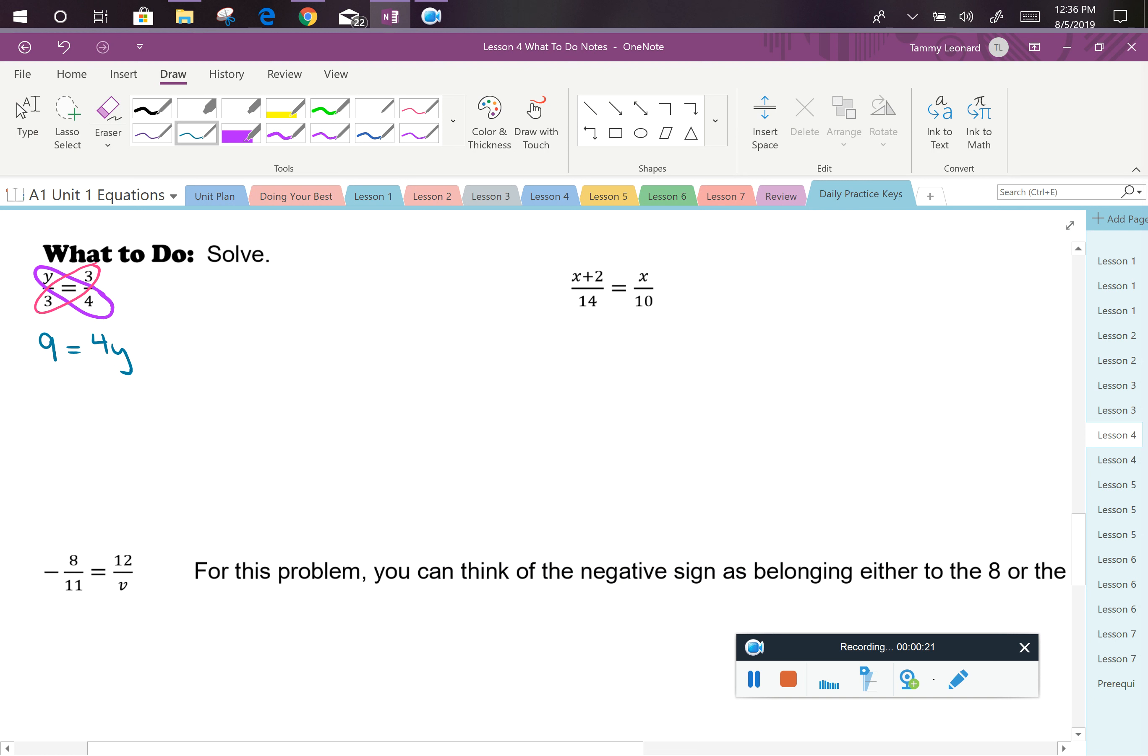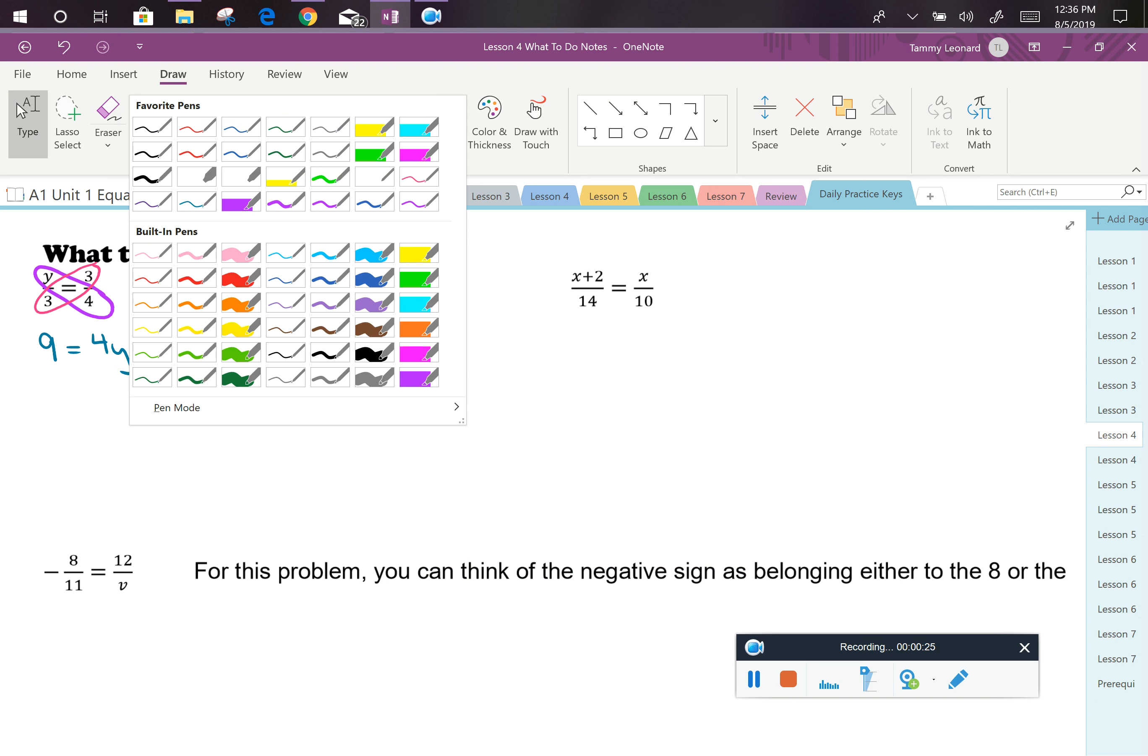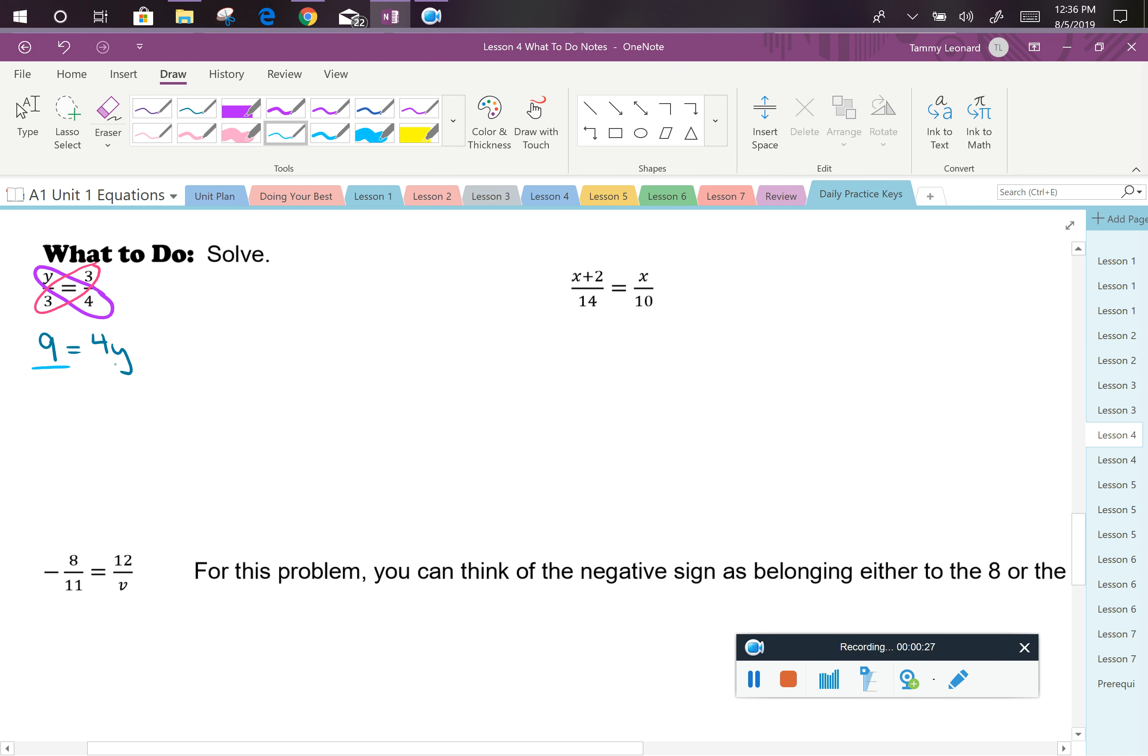This isn't an answer yet because y is not alone. So next, I'm going to want to divide each side of the equation by 4 to isolate the y. This will give me my final answer: 9 fourths is equal to y. Notice my answer is a fraction, and that's okay. We're going to leave it in its reduced improper fraction form since 9 and 4 don't have anything in common.